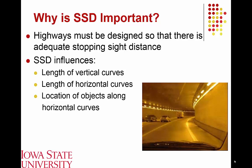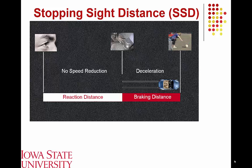When estimating stopping sight distance for a given location, we're concerned with two components: reaction distance and braking distance. Reaction distance is the physical distance from when the driver first sees an object in the roadway to the point when they begin applying the brakes — essentially accounting for perception-reaction time. Once the decision to brake is made, braking distance is calculated using fundamental equations from physics up to the point where the object is located.